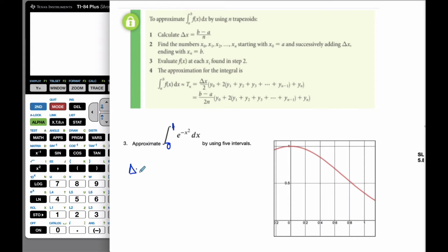And so if I'm going to find my delta x, I'm going to go 1 minus 0 divided by 5, because I'm going to do 5 intervals, and this is 0.2.